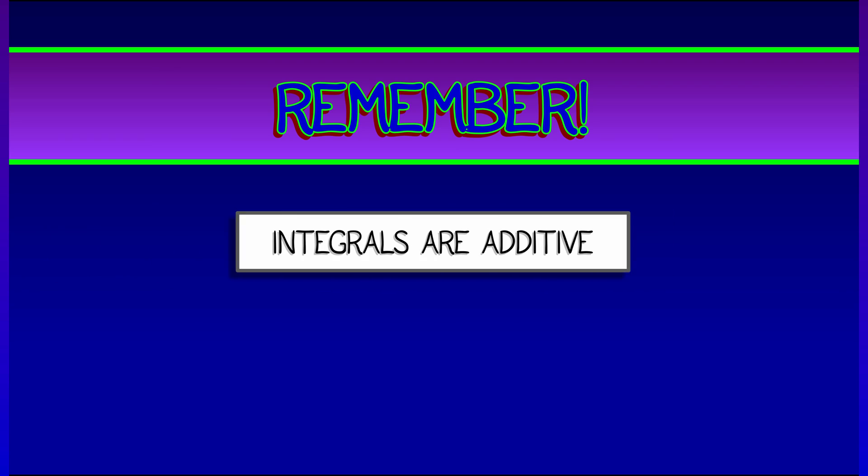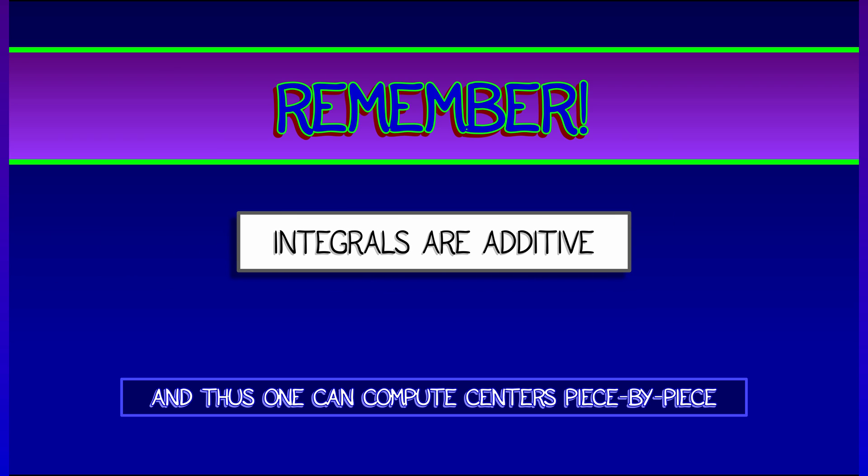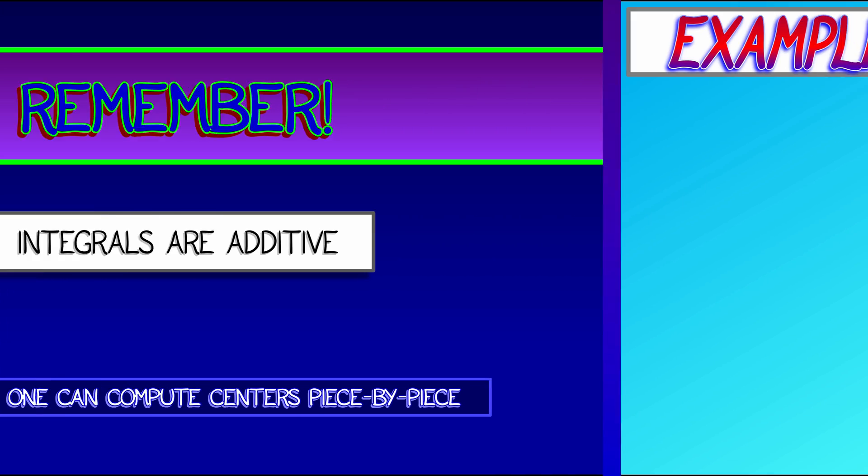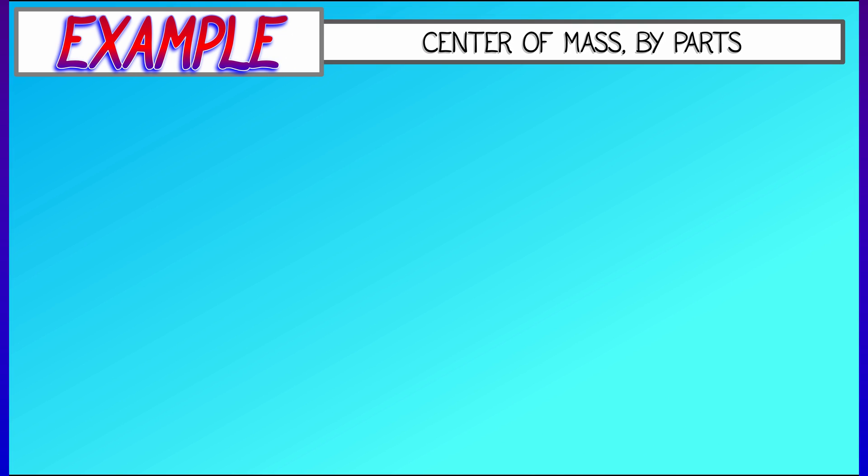You're going to want to keep in mind when working with complicated regions that integrals are additive, and therefore you can compute centers piece by piece and then average them together at the end. Let's see how this works in the following example.